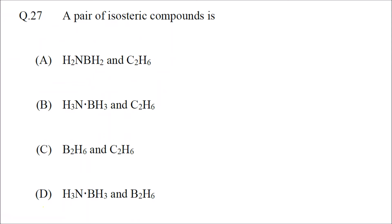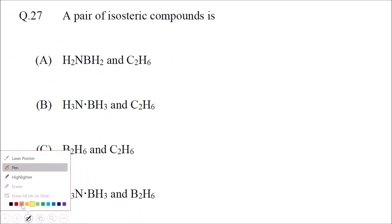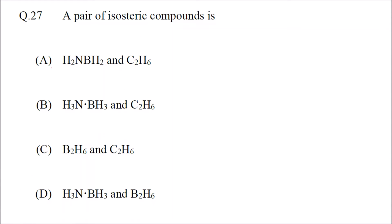Now let us see the examples given to us. Option A: if you see the total number of atoms, here it is 2 plus 6 equals 8, and here it is 2 plus 1, giving 3, 4, 5, 6 — the total number of atoms is not the same. So option A is incorrect. Option B: nitrogen boron, 2 plus 3 plus 3 — total 8 atoms; here also 2 plus 6 equals 8 atoms. So this can be the answer.